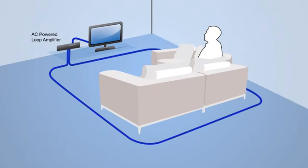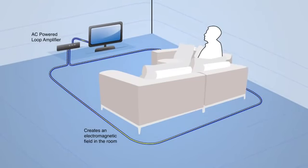The media signal is sent from the television or stereo system to the amplifier which then sends the signal through the loop surrounding the room or seating area. As the signal travels through the wire, it creates an electromagnetic field that fills the room.